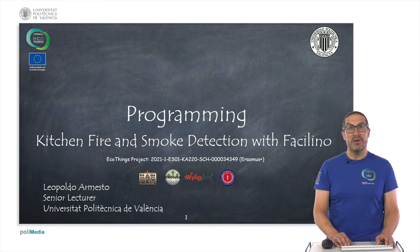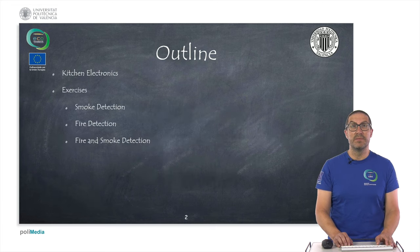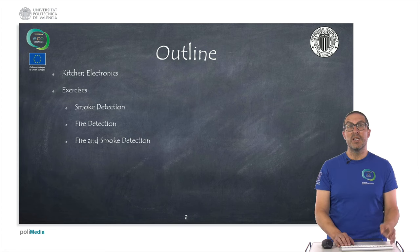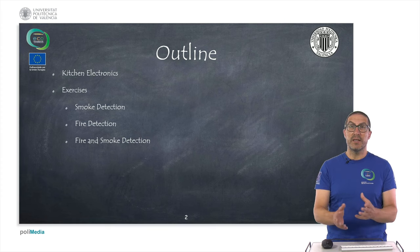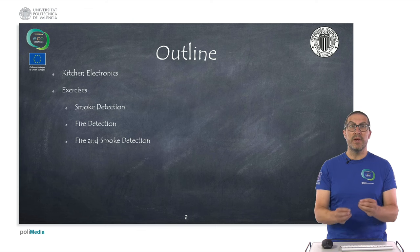Hello, my name is Leopoldo Armesto and in this presentation we continue learning how to use Facilino. We are going to present some exercises to work with the kitchen of the intelligent house. The outline covers a brief review of the kitchen electronics, followed by three exercises: one for detecting smoke, one for detecting fire, and a third combining fire and smoke detection.